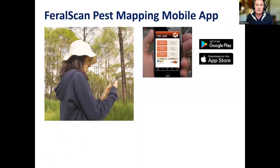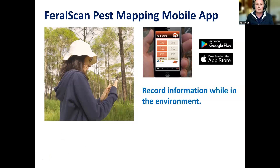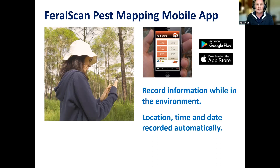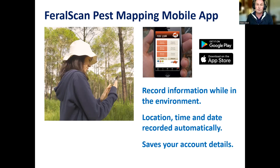Usage of the mobile app has increased enormously and a lot more people are comfortable using mobile apps to record things on the go. Some benefits of using the FoxScan app on your mobile devices: obviously you can do it when you're traveling around your local area, the location, time, and date is automatically estimated for you, and information you record is saved directly into your account. This is a purpose-built product — if there had been an off-the-shelf product available when we started designing FoxScan, we probably would have looked at those, but there wasn't anything around.